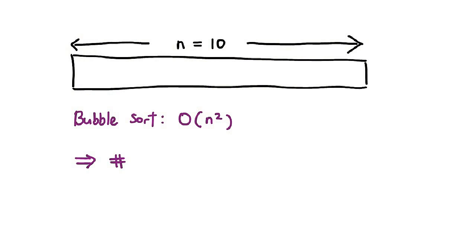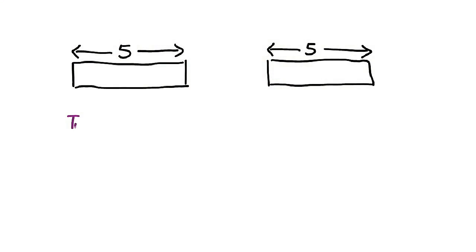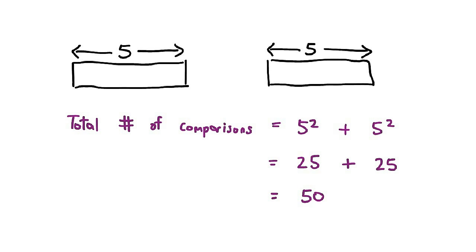This might seem like a terribly roundabout way of doing things, so why would I want to do that? Let's say I have a 10-item list that I want to sort with Bubble Sort. We know that Bubble Sort takes N-squared time, meaning for a list of 10 items it's going to make 100 comparisons. What I'm going to do is break this list into 2 lists of 5 items and still use Bubble Sort on each bucket. The time taken is 5-squared plus 5-squared — notice that I'm only making 50 comparisons in total, not 100.